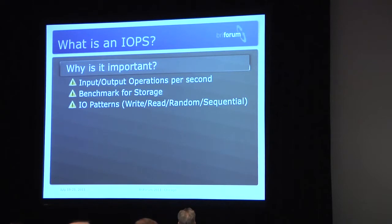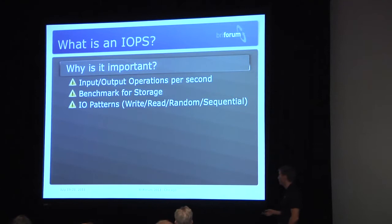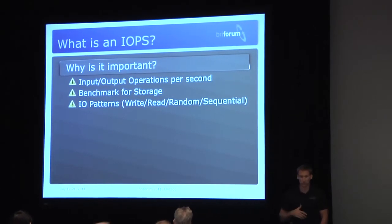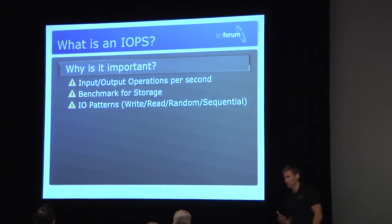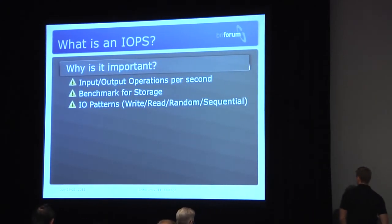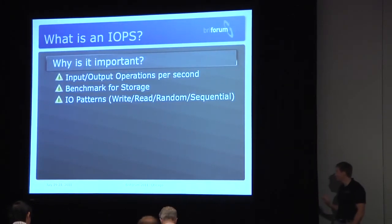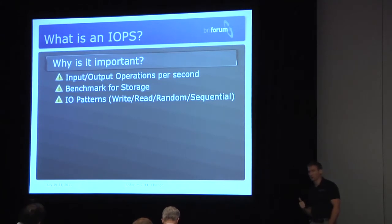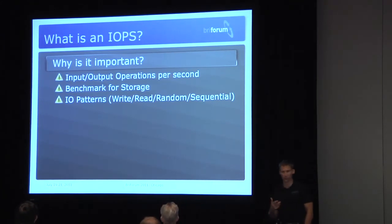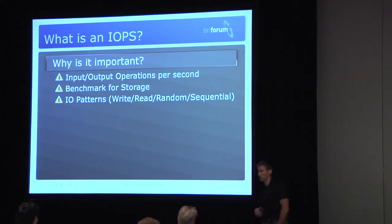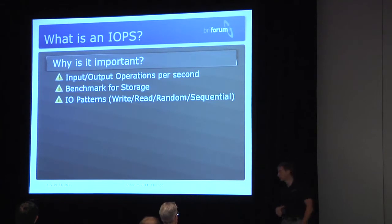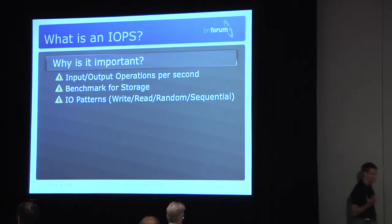The first slide is: why is an IOPS important? An IOPS is the measure of input-output operations per second. Unfortunately, we use this as a benchmark for storage — just like we typically use CPU% for the CPU, this is the benchmark for how fast IO is going for storage. We'll talk today about two basic patterns: IO can be a read or write, and that read is either sequential — meaning in order — or random.